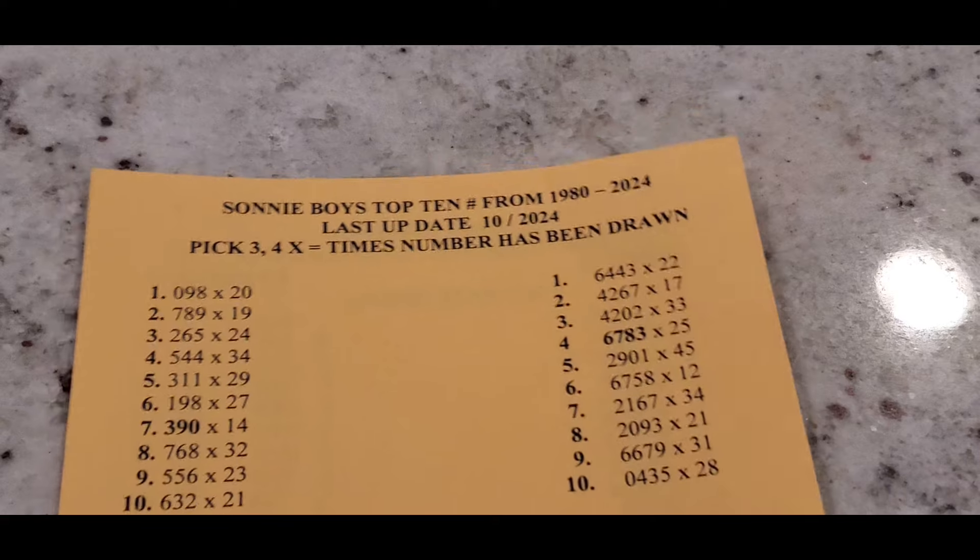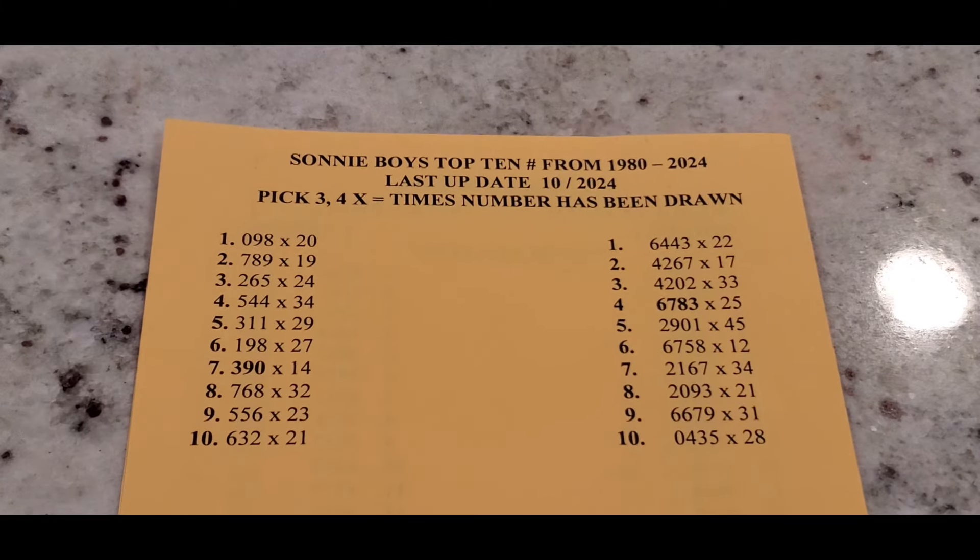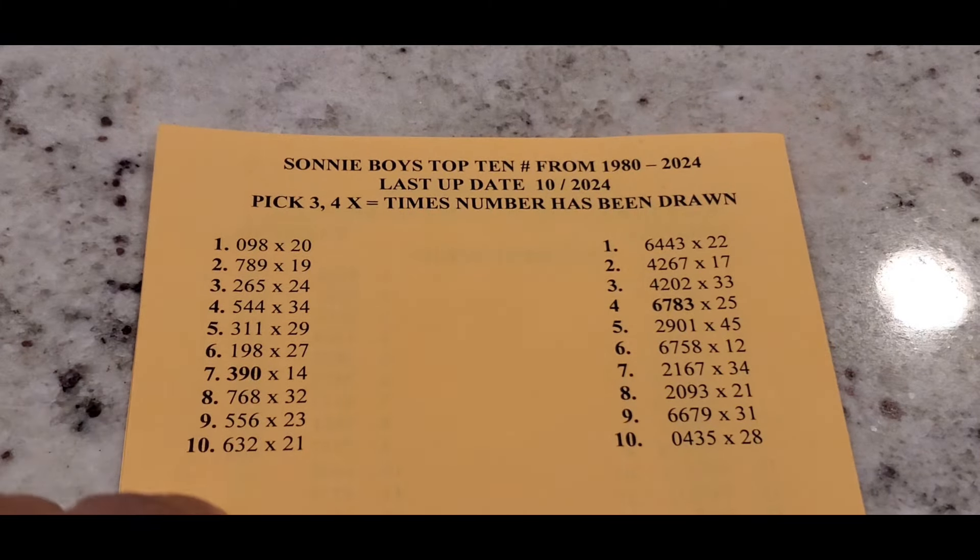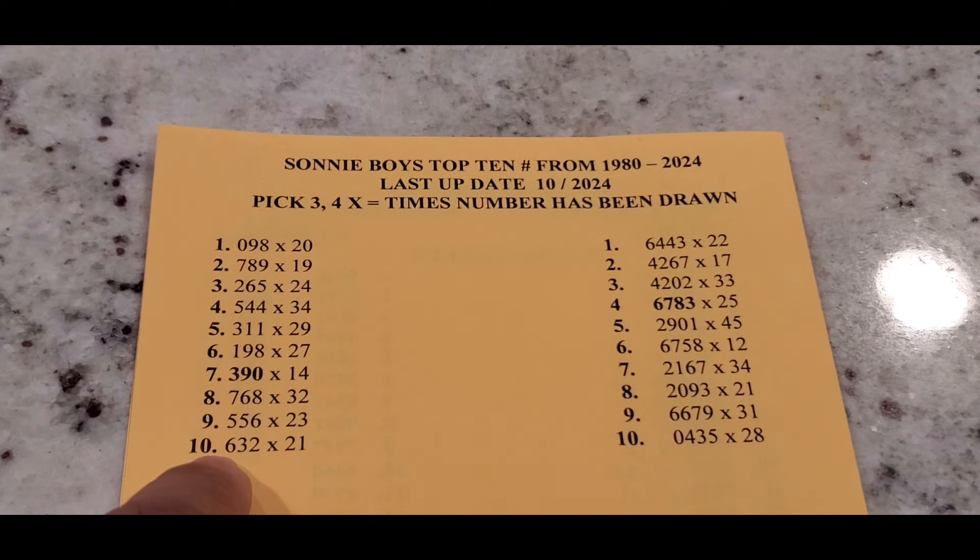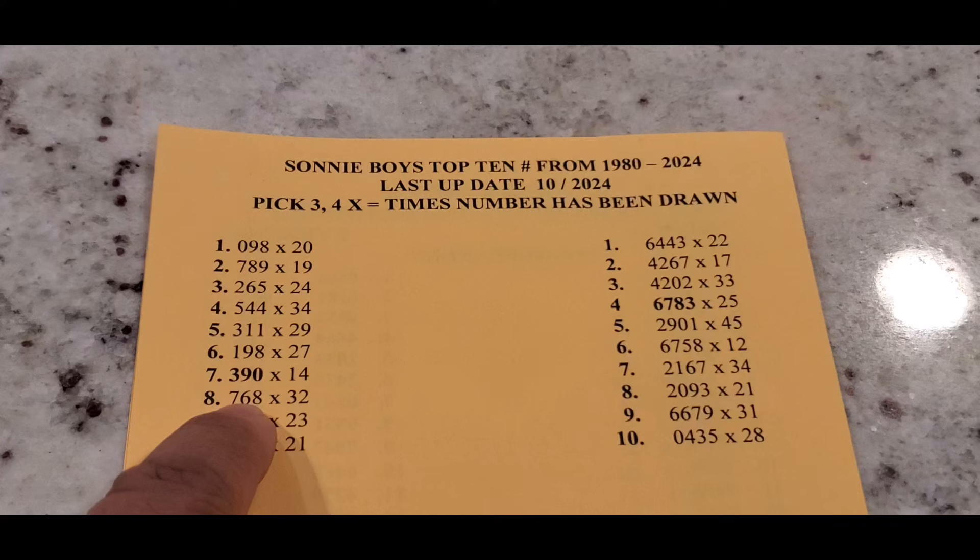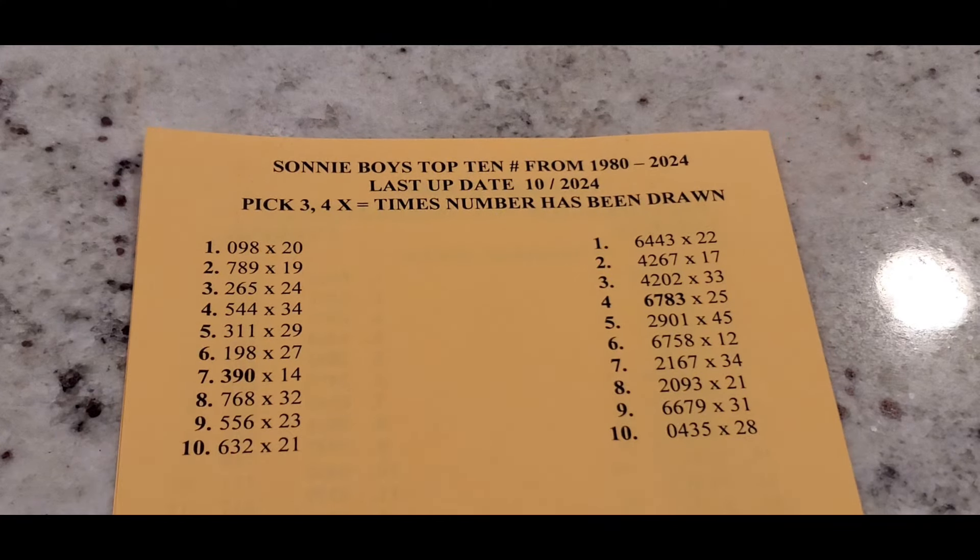As you flip over to the back right here, it gives you all the odds of the numbers coming, how many times these numbers have failed. So right here it tells you at the top, between 1980 and 2024, this number 10,632 failed 21 times.